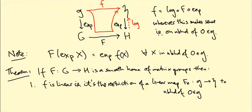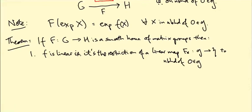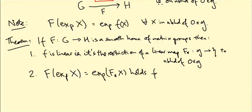F star is the linear map from little g to little h that gives us little f when restricted to this neighborhood. The remarkable fact is: this formula F of exp(X) equals exp of F star(X) holds for all X in G.